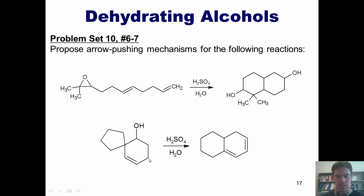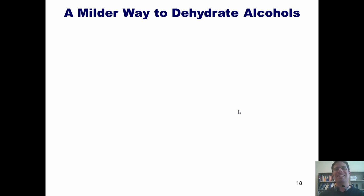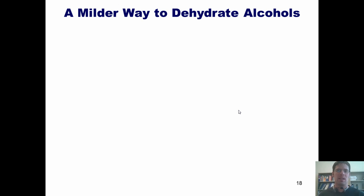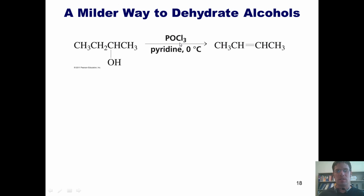How in the world do I convert this starting material into this product by treatment with H2SO4 and water? I know that as you look at this, you'll think the starting materials don't look anything like the products — and that is what makes these reactions so cool. We can dehydrate alcohols using H2SO4, H3PO4, or other strong acids. But what if I don't want to use a strong acid and I've got a molecule that's very sensitive to strong acids? Is there another way to remove an OH and form an alkene? There is.